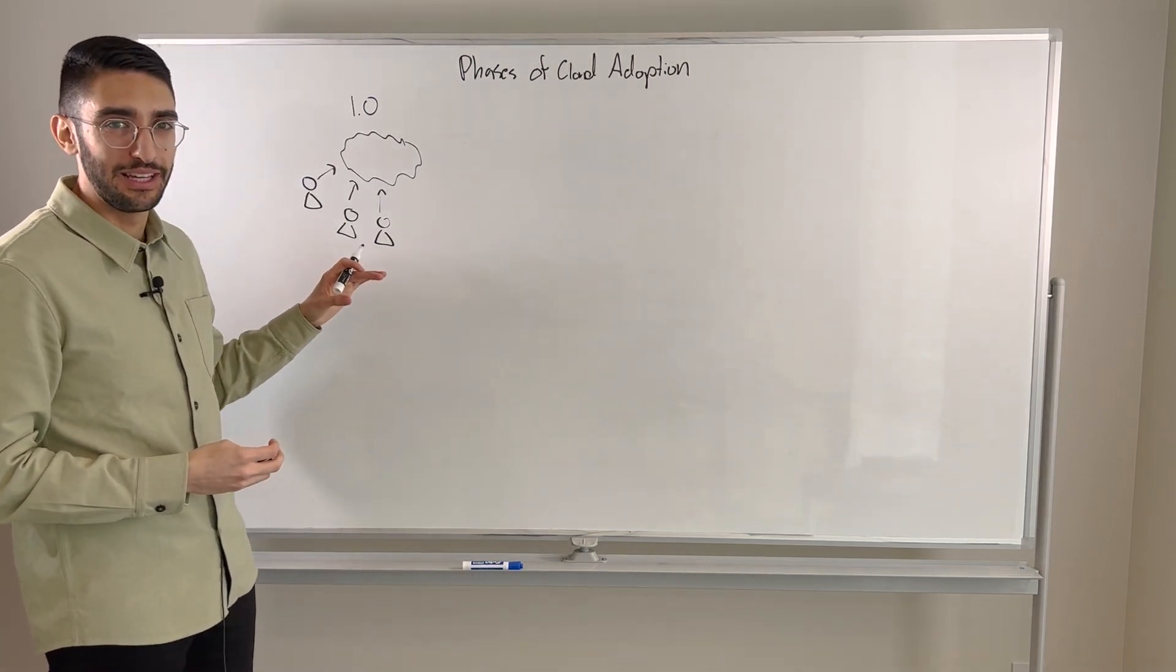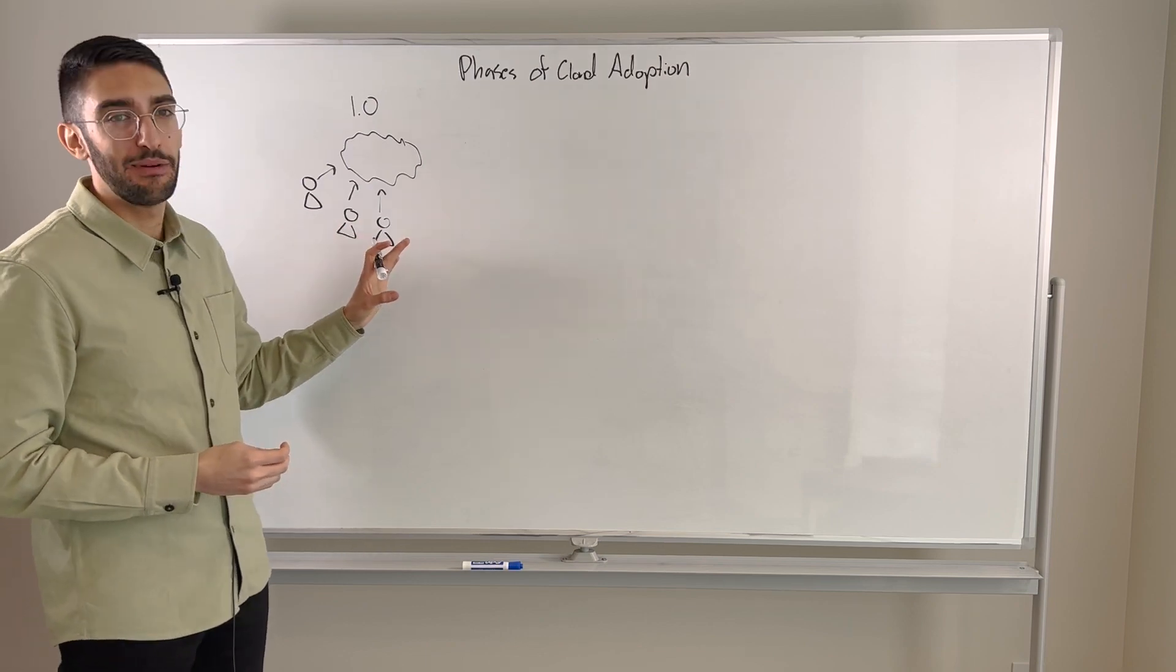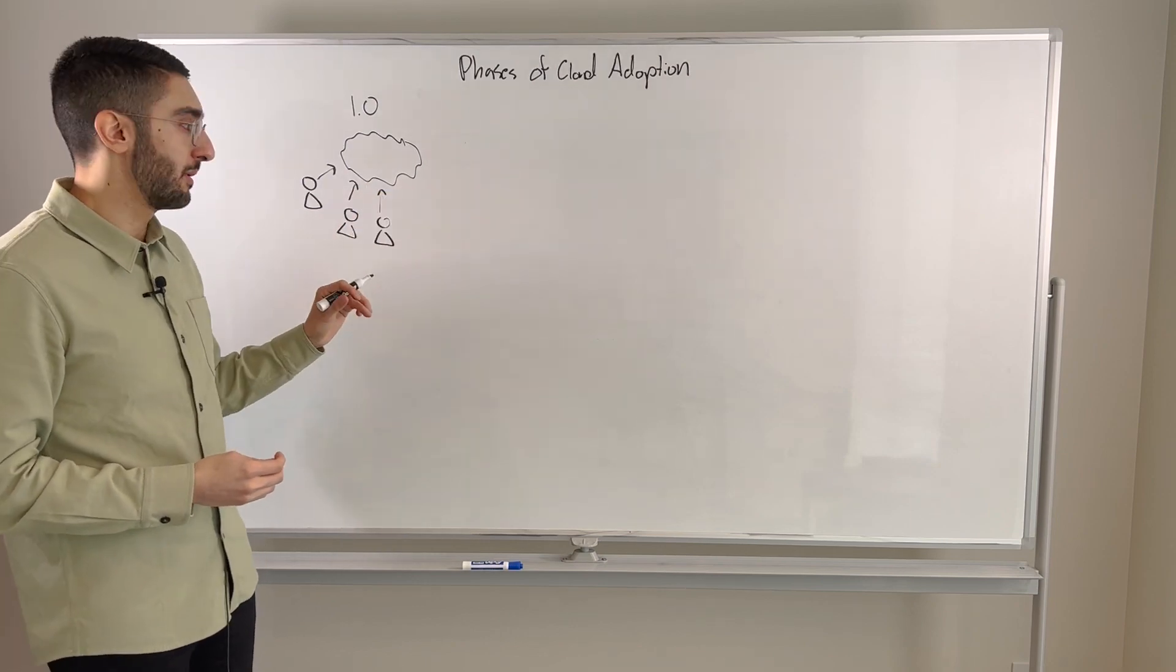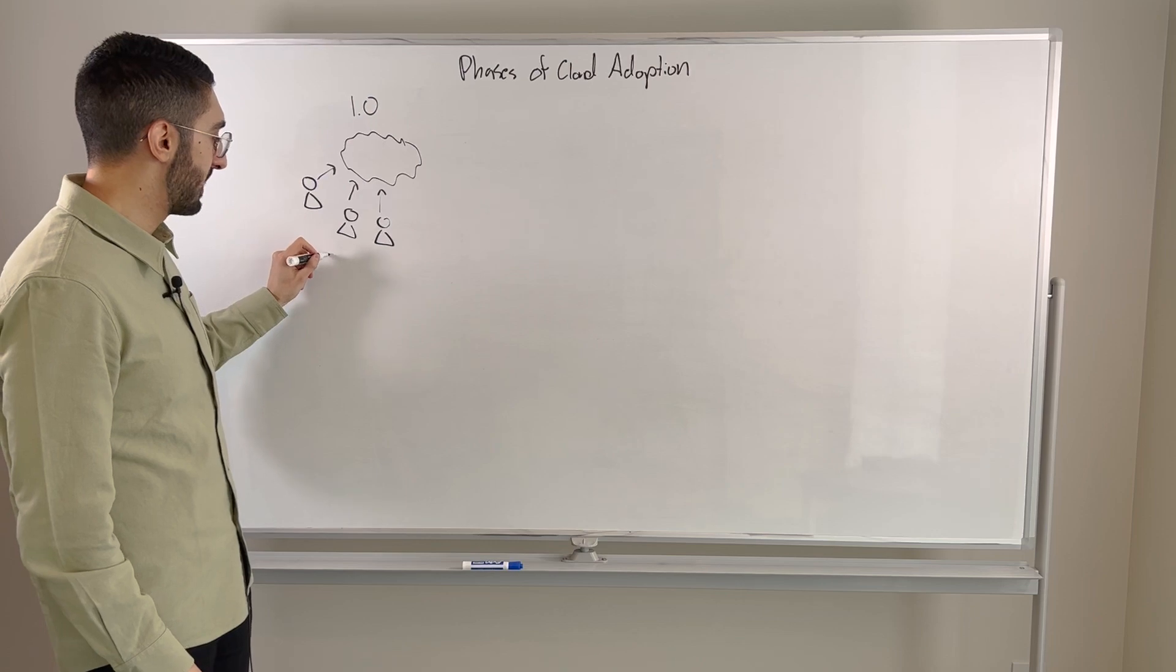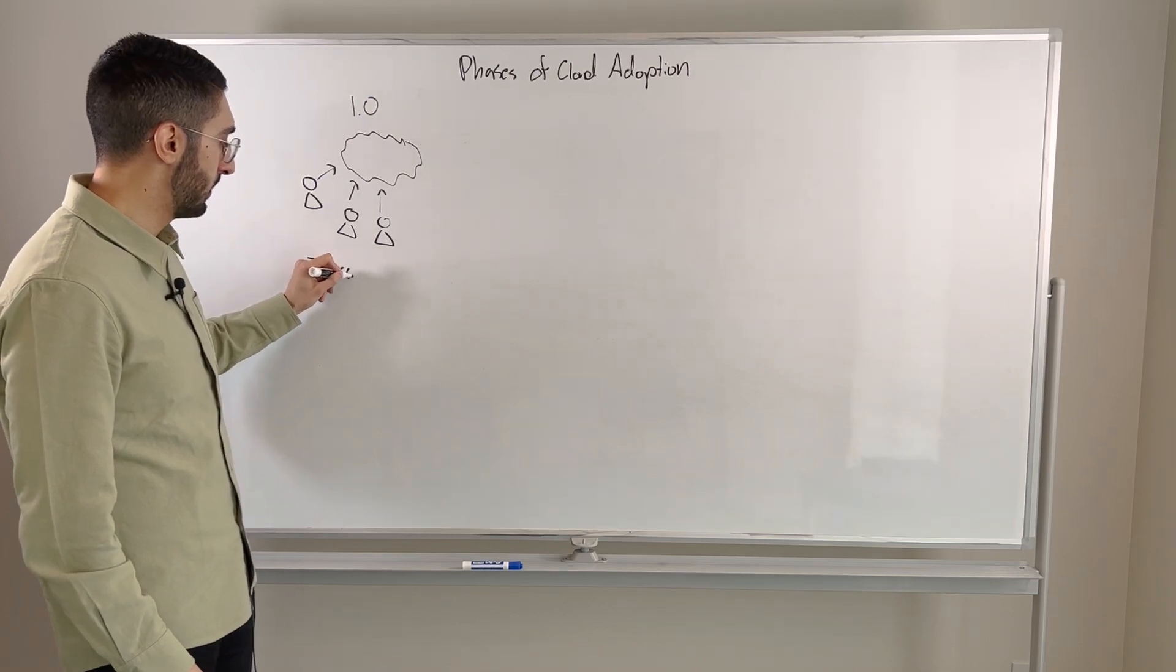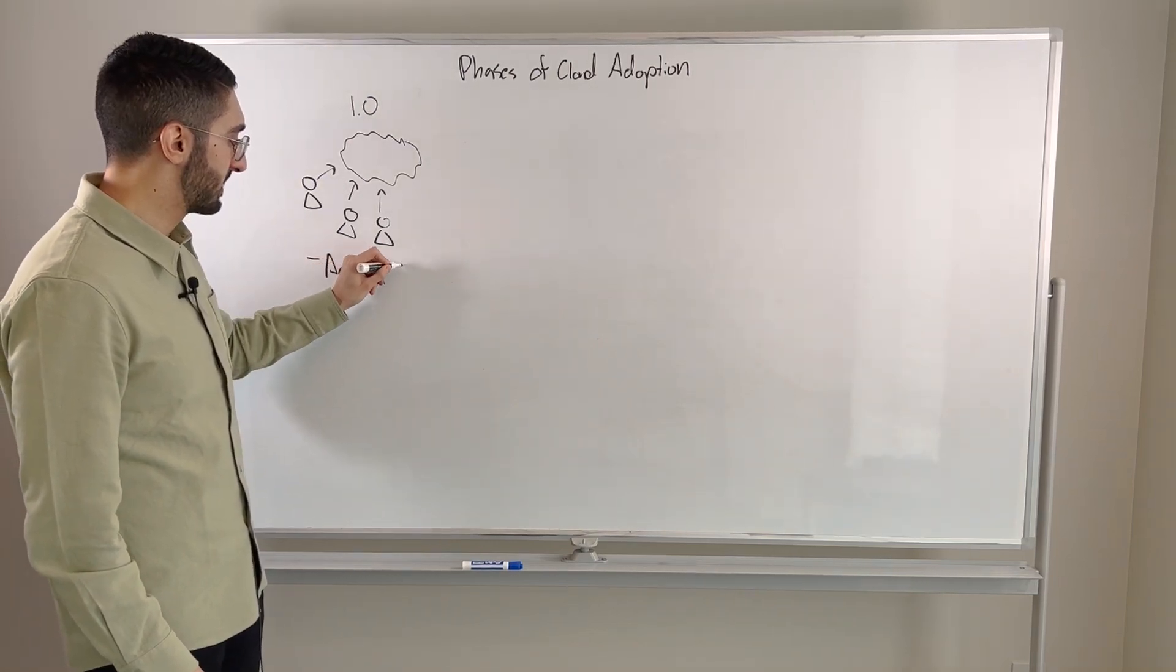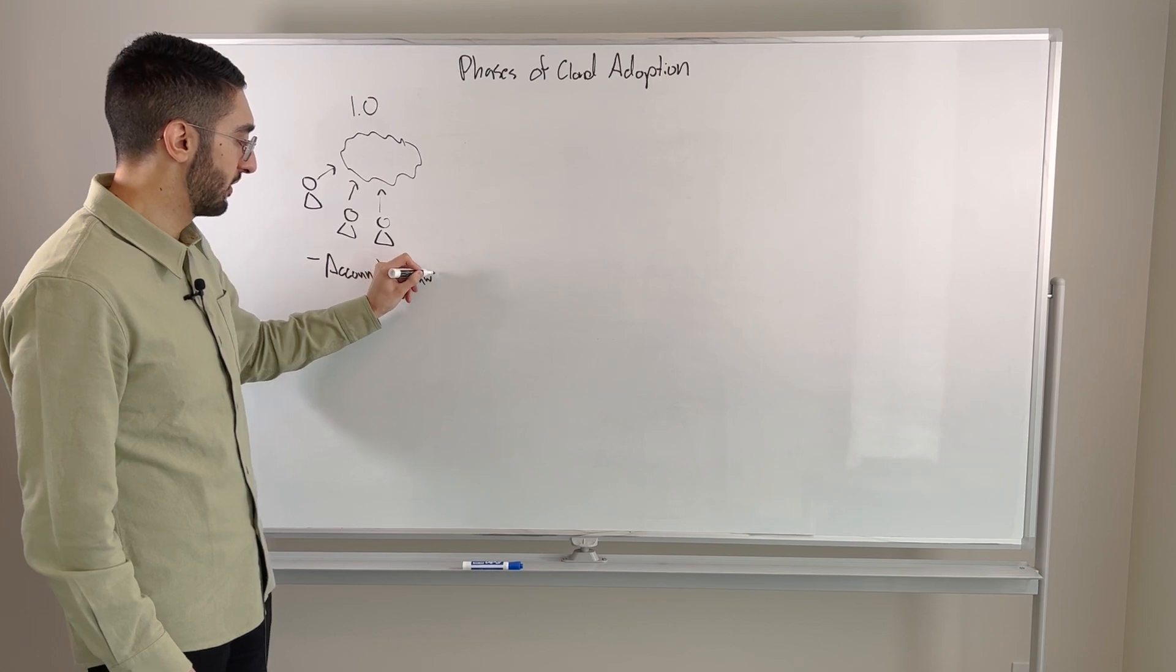And so almost inevitably, 12 months, 18 months later, you end up with a number of problems. Which is you now have things like account and resource sprawl, because each of these teams are just running free and doing whatever they want.